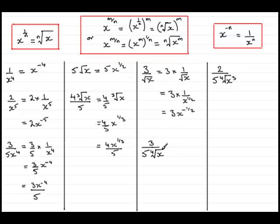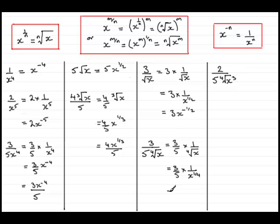This next one is much the same but with a number in the denominator — 3 over 5 times the 4th root of x. When you have a number in the denominator just leave it there. We look at this as 3 fifths multiplied by 1 over the 4th root of x. The 4th root of x is x to the quarter, so we get 3 fifths times 1 over x to the quarter. By the negative power rule that becomes x to the minus a quarter, giving us 3x to the minus a quarter all over 5, or equivalently 3 fifths x to the minus a quarter.